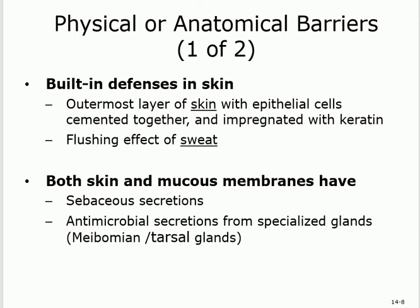Skin and mucous membrane are the first physical or anatomical barriers. How does the skin protect us? The skin contains an outermost layer that is keratinized — full of keratin, so it's very tough — and the cells are cemented together to be tougher. So if something is trying to invade, that will be really hard.